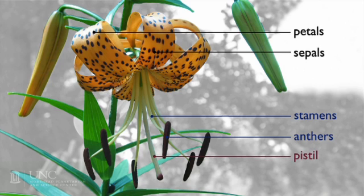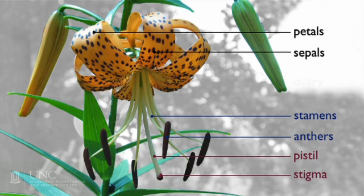Here is the pistil. This is the female part of the flower. You can see the stigma at the tip of the pistil — this sticky part is where the pollen must land during pollination. At the base of the pistil is the ovary. This is where the ovules are located. The eggs found in the ovules hold the female chromosomes. When the flower is pollinated, the pollen will deliver a set of male chromosomes to the egg.